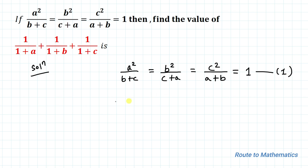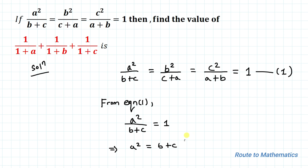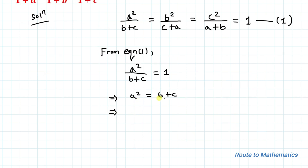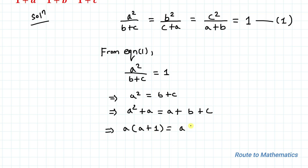From equation 1 we can write a² divided by (b+c) equals 1, which implies a² equals b+c. In the next step, by adding a to both sides of the equation, we have a² plus a equals a plus b plus c. Taking a common from the left side, we have a multiplied by (a+1) equals a plus b plus c.